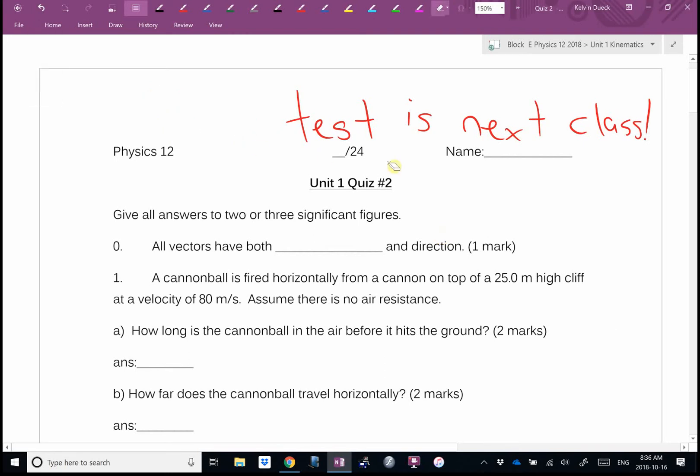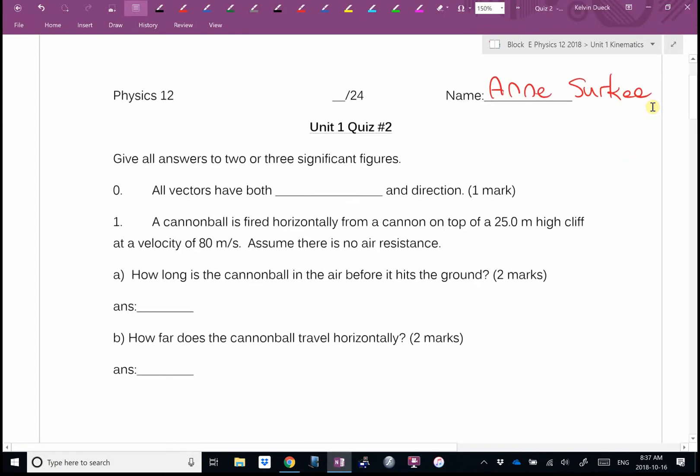So your test is next class. All vectors have both what and direction? Magnitude. I called that question zero because I was hoping that was like free marks. If you didn't do it, you can try it tonight but you missed out on a chance to make some mistakes.